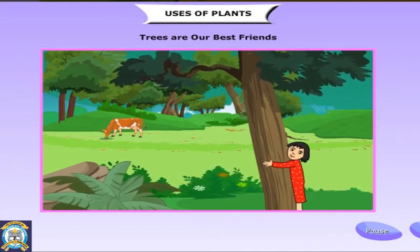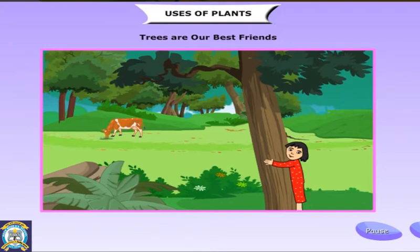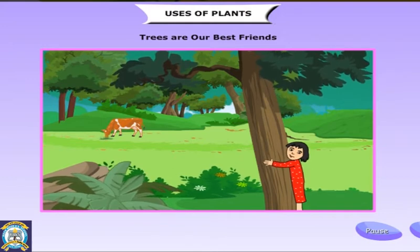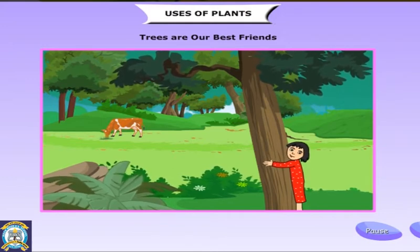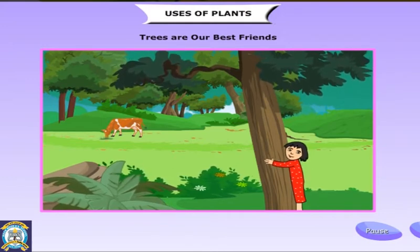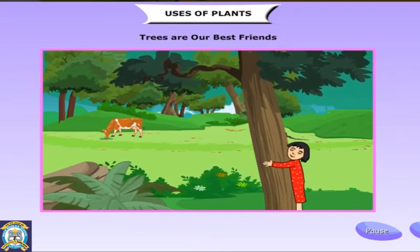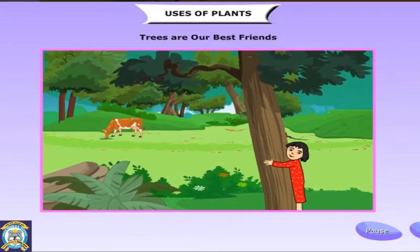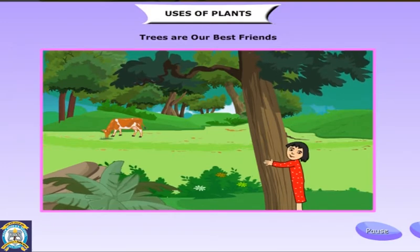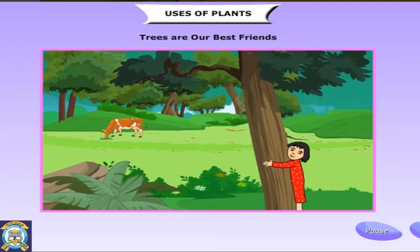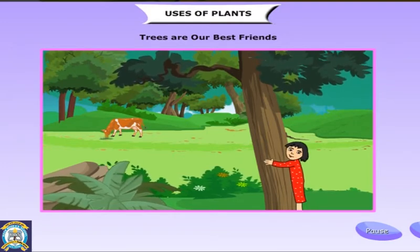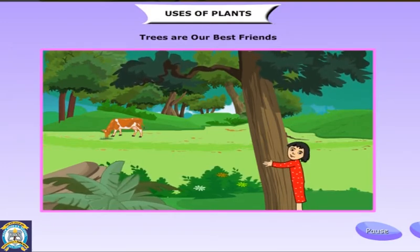Different parts of a plant are useful to us in different ways. We get cereals, food items, timber, medicines, paper, rubber, resin and gum from trees.